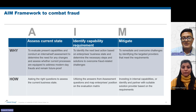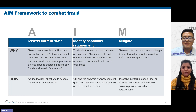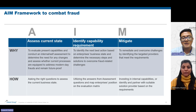The AIM framework can be divided into three parts: Assess, Identify, and Mitigation. Assessment is the current state assessment — understanding where exactly your business lies in terms of exposure to fraud and capability requirements. Identification uses a series of questions to place your organization on a grid, helping you understand capability requirements relative to fraud exposure. Mitigation covers the steps needed — whether to make in-house investments or engage third-party resources to combat different types of fraud.